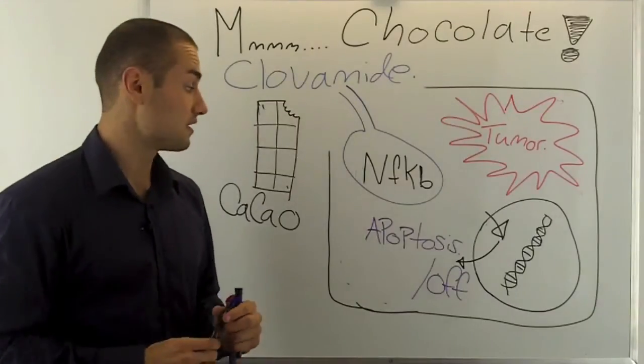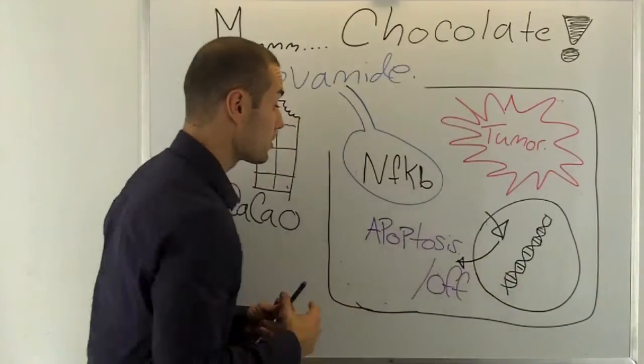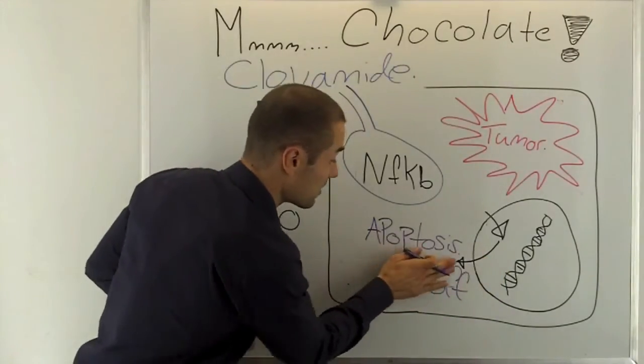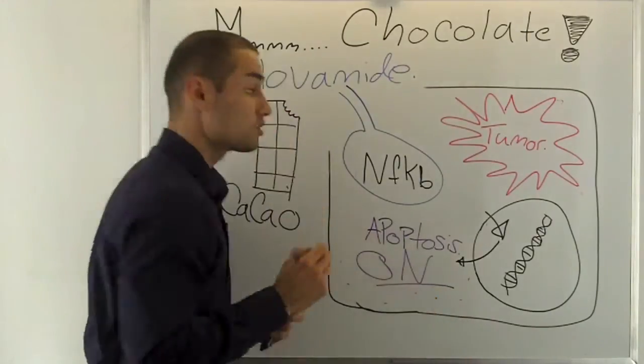So what this means is now since nuclear factor kappa beta is not going within your nucleus your signaling of apoptosis right here becomes on. This is good.